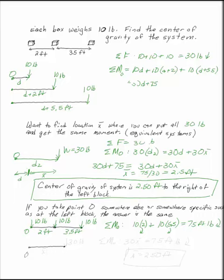My second system would just be O and x bar, 30 pounds. My sum of the moments at O is 30 times x bar. Setting that equal to 75 foot-pounds clockwise, x bar is 2 and a half feet.